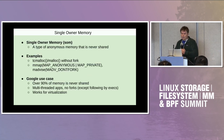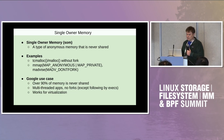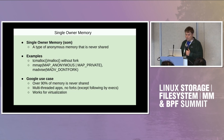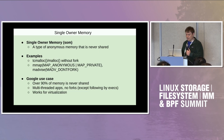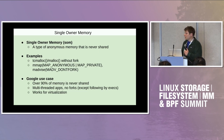A single owner memory is a type of anonymous memory that is never shared. Examples would be malloc, and no forks after that, or mmap followed by something like MADV_DONTFORK. In Google, over 90% of our memory in the fleet is never shared. The reason is that we don't use processes, we use threads. And if we use forks, they are followed by execs.